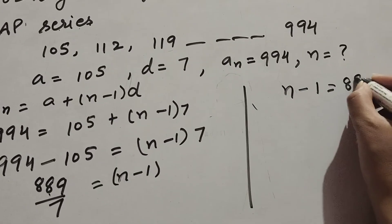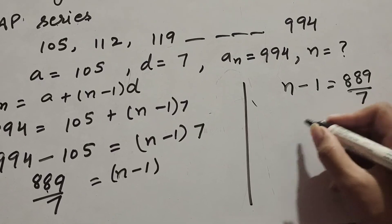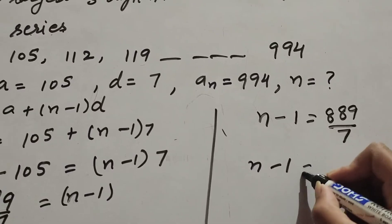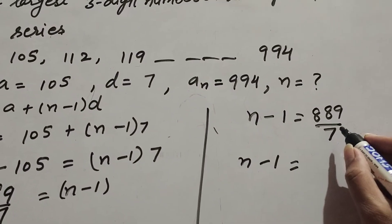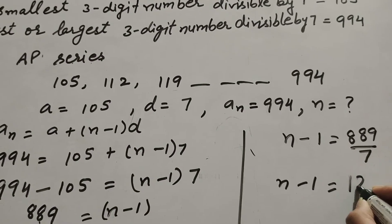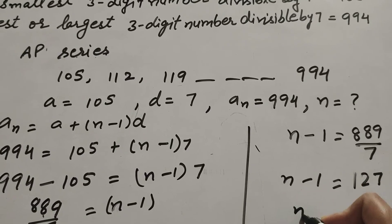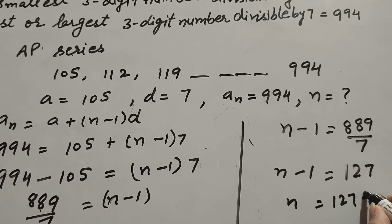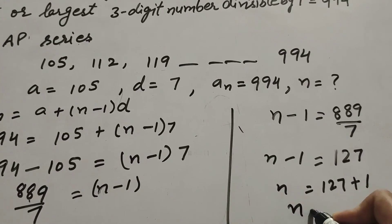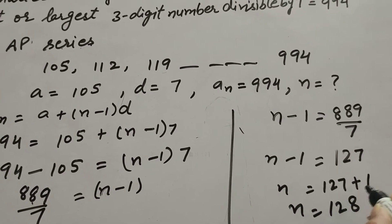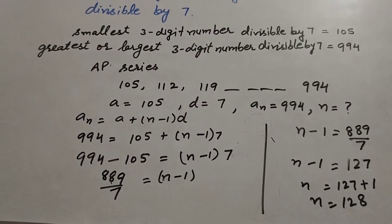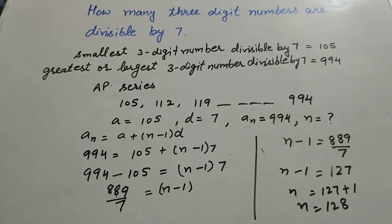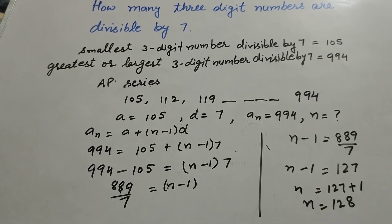Dividing both sides by 7: n − 1 = 889 ÷ 7 = 127. Transposing −1 to the right-hand side: n = 127 + 1 = 128. Therefore, there are 128 three-digit numbers that are divisible by seven. Thanks for watching!